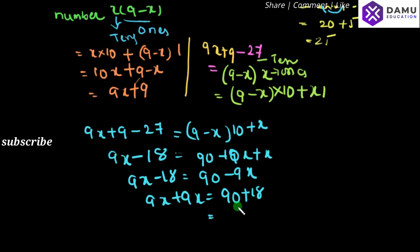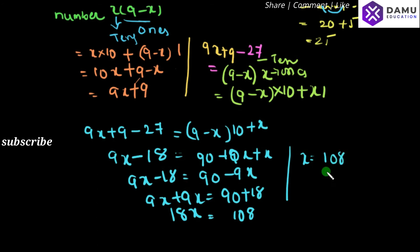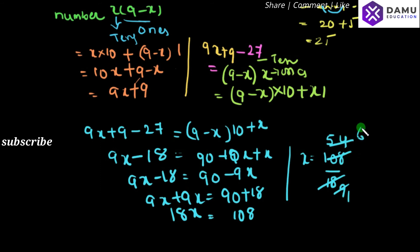So 90 plus 18 gives us 108. Therefore 18x equals 108, and x will be equal to 108 divided by 18. Calculating: 18 into 6 equals 108, so x equals 6.